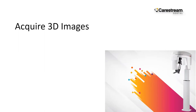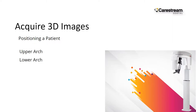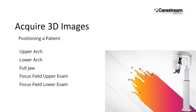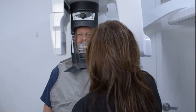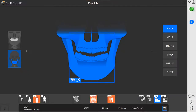Acquiring 3D images — positioning a patient for the following 3D exam types: upper arch, lower arch, full jaw, focus field upper exam, and lower field focus exam. Prepare the unit and the patient, then use the optimized face-to-face positioning system to position the patient. Note: in the patient's history record, any settings used during their first visit are automatically saved. The patient height icon will appear in orange for returning patients.